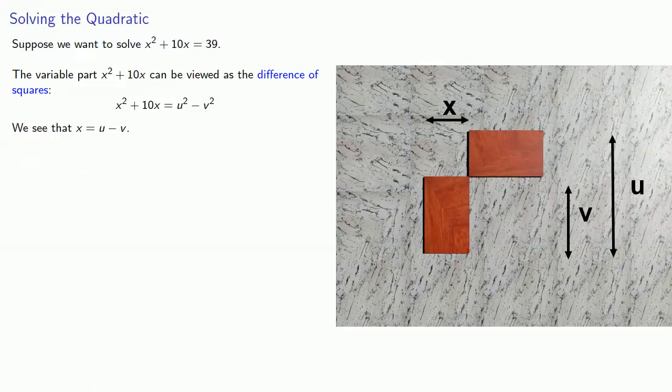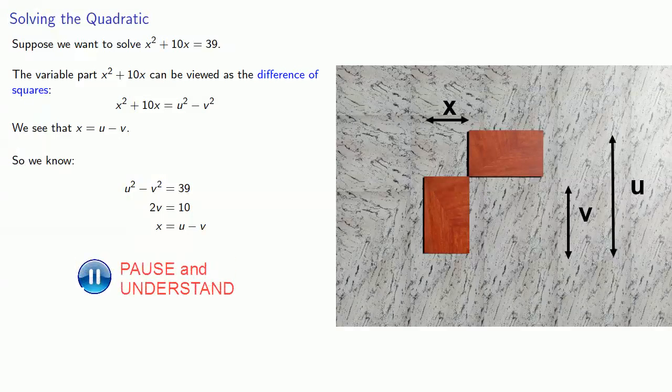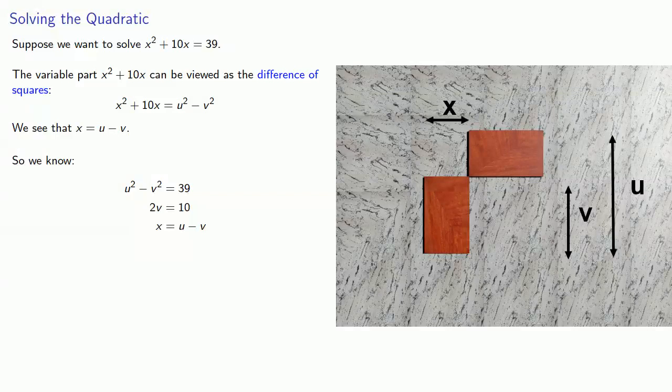And so we know that u² - v² equals 39, the constant. 2v equals 10, the coefficient of x. And x itself is u - v. And this allows us to solve the equation.